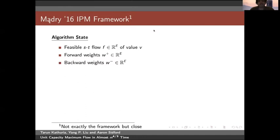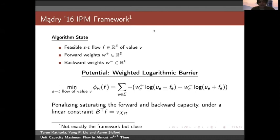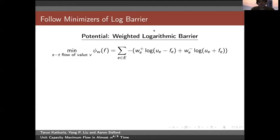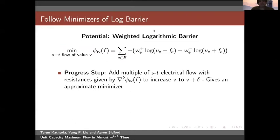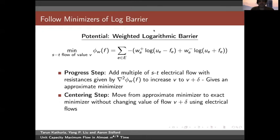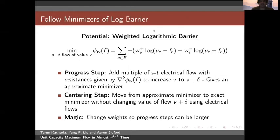For the framework, there is an algorithm state where I have sent a feasible flow of value v. I have forward and backward weights for every edge, different from its capacity. Our potential is a weighted log barrier, which penalizes the forward and backward capacity saturation while ensuring the flow we send has value v. We want to follow the minimizers of the log barrier. Madry does this in two steps: a progress step, where we add a multiple of an s-t electrical flow with resistances given by the Hessian of the barrier, increasing flow from v to v + delta; and then a centering step.